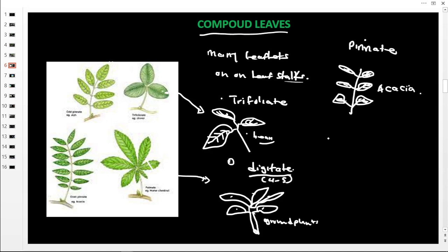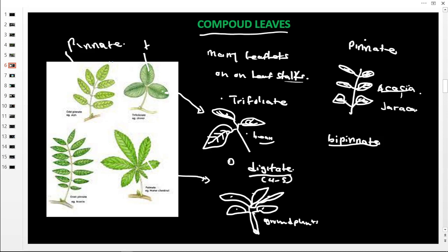From there we have compound bipinnate. The pinate is found in acacia plants, while compound bipinnate is found in jacaranda — that is omusambia. The main leafstock produces other leafstocks, and each of those also produces further rachis carrying leaflets.